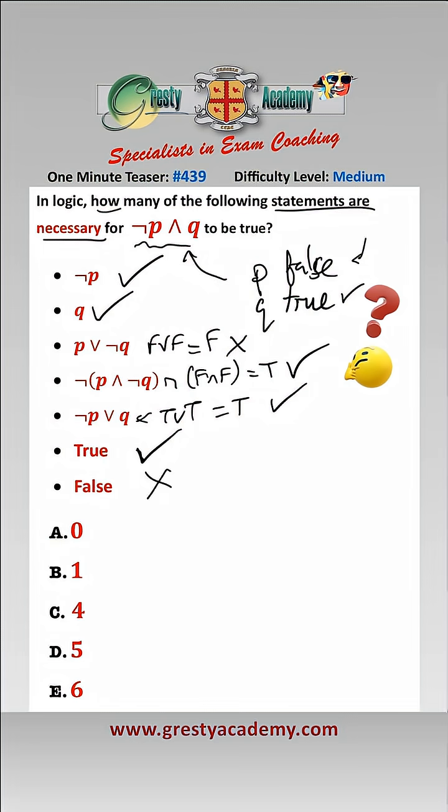And so therefore the number of statements which are necessary is one, two, three, four, five, which is answer D. See you then.